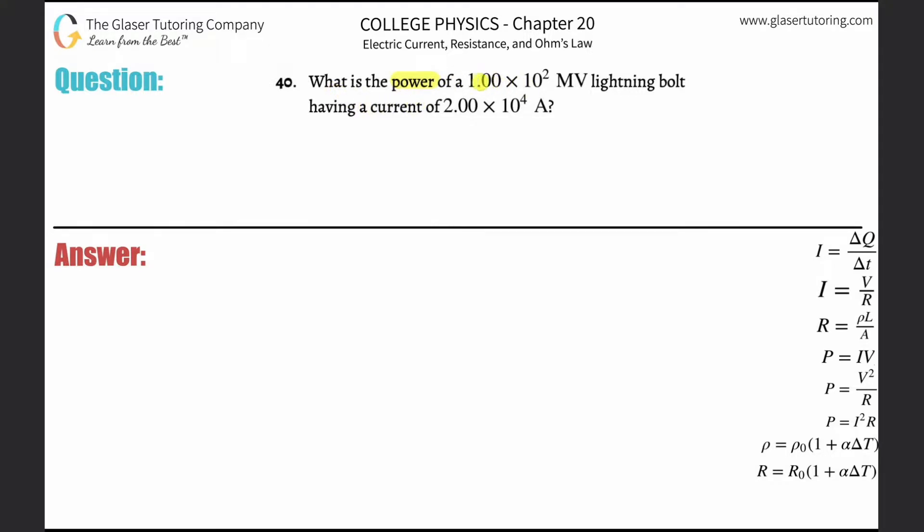Number 40, what is the power of a 1 times 10 to the 2 megavolt lightning bolt having a current of 2 times 10 to the 4 amps?